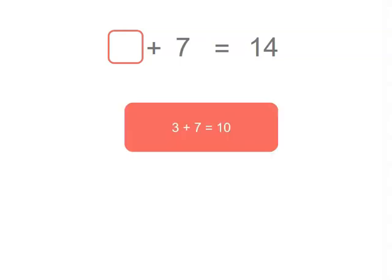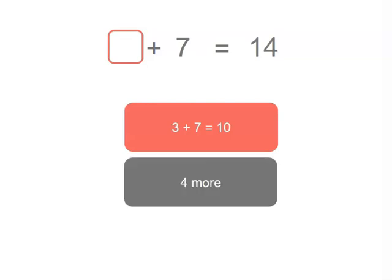Well, if I add 3 to 7, I get 10. But I've got 14, which is 4 more. So instead of 3 plus 7, 3 and 4 more is 7. 7 plus 7 gives me 14.